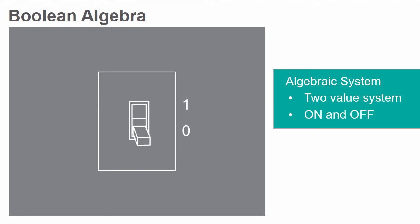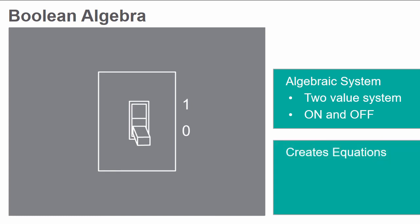The number and combination of logic gates required to construct a particular circuit is dependent on its Boolean algebra equation. The operations in this algebraic system are binary multiplication, binary addition, and complement.